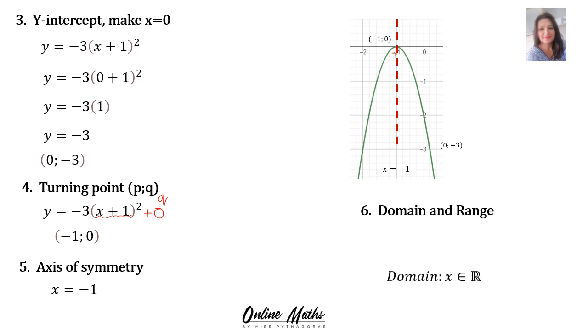Domain, for any parabola, x is an element of the real numbers. And then the range, you read it from the bottom upwards. And you zoom in on the y-coordinate of the turning point. Therefore, the range for this graph is y is an element from negative infinity, not included, up to 0 included,